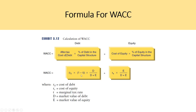The WACC formula takes the after-tax cost of debt — RD times (1 minus T, the marginal tax rate) — weighted by the proportion of debt in total capital (D divided by D plus E), plus the cost of equity RE weighted by its proportion (E divided by D plus E). You tax-affect the cost of debt because interest expense is tax-deductible, but you do not tax-affect the cost of equity. D plus E equals the total market value of capital, with D being the market value of debt and E being the market value of equity.